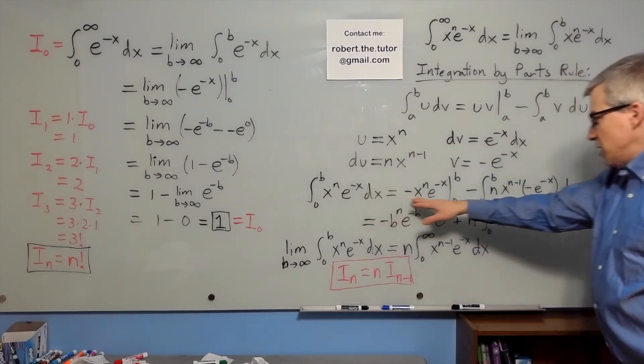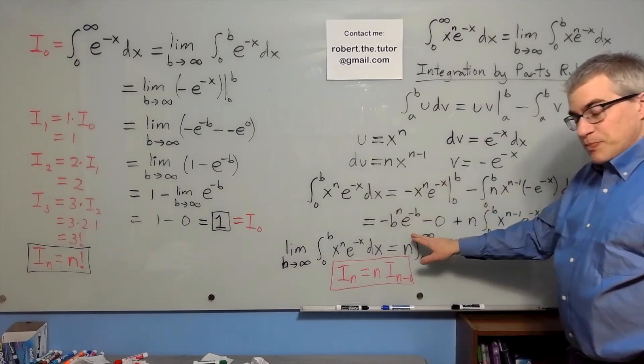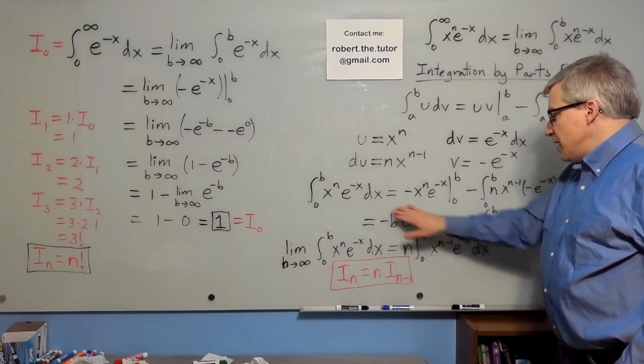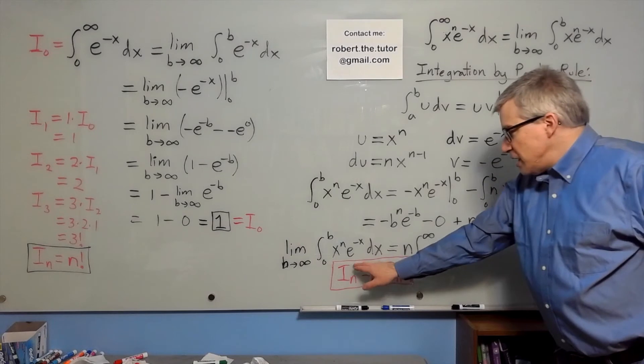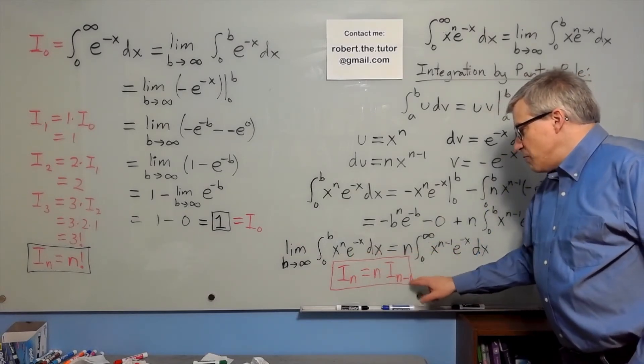When we plug those in we get a term that vanishes as b goes to infinity because e blows up faster than any polynomial. That goes to zero and what it boils down to is that integral n here is n times integral n minus one.